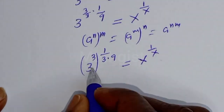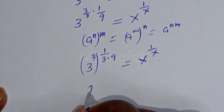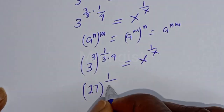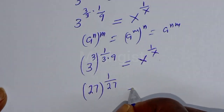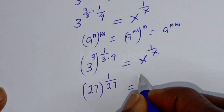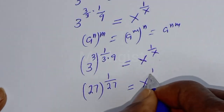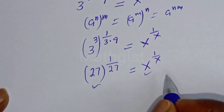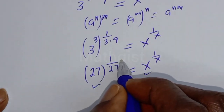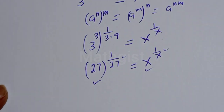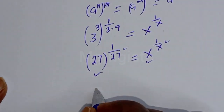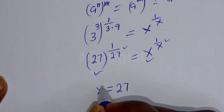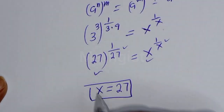Then this is 3 raised to power 3, that is 27, to the power of 1 over 3 times 9 equals 27, equal to s raised to power 1 over x. From here, the exponent gives 1 over 27 equal to 1 over x. Therefore, s is equal to 27. This is the final answer.